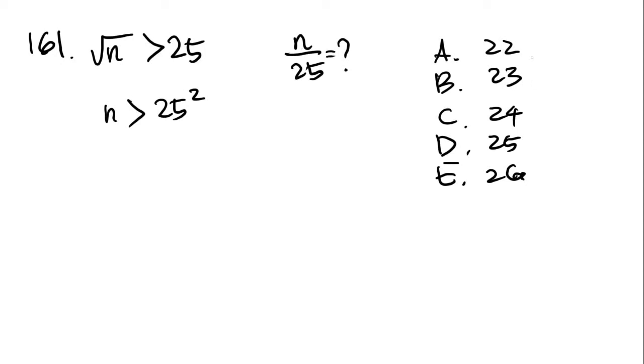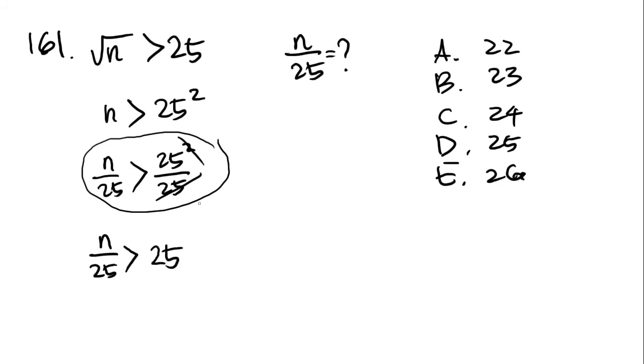We're looking for a possibility, which one of these could be n over 25. So n over 25 would have to be greater than 25 squared over 25, because n is greater than 25 squared. So if n were smaller, then it would make this false. So 25 squared is 25 times 25, so we can cancel out and get n over 25 is greater than 25. Which one of these answer choices is greater than 25? That's how we solve 161.